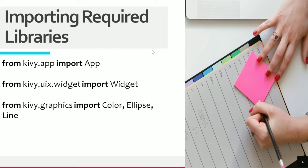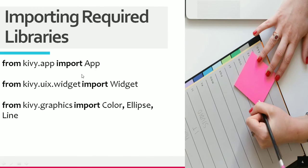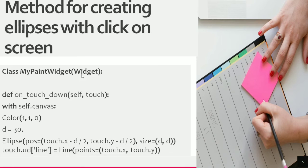Now let's look at the method for creating ellipses with a click on screen. First, we create a class in which we pass the Widget that we imported from kivy.uix.widget. Then we create a method providing the self keyword along with touch.